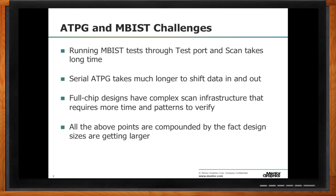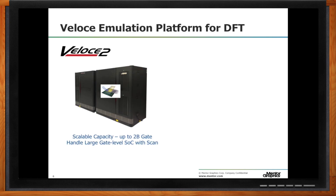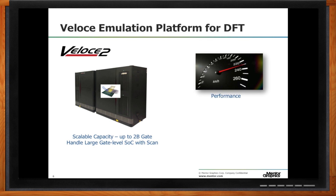I think I understand why I might want to use an emulator for DFT. Tell me why I'd want to use Veloce specifically. It's probably the best emulator platform on the market — but I'll be the first one to say that. There are really two main reasons, maybe two and a half. The first is capacity. We're talking about full-chip SoC — 250 million gates for a networking chip, CPU, or GPU. You need to run full SoC scan mode with all the vectors. Capacity is where we shine with Veloce. The second is performance: you run faster than simulation, which is the fundamental value proposition of an emulator.